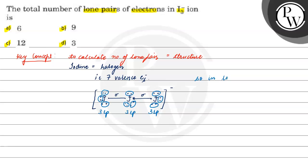So in total, there are nine lone pairs present. The correct answer is option B, that is nine lone pairs. Hope you understood the question well, thank you.